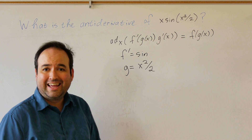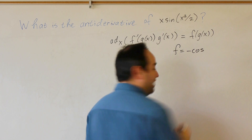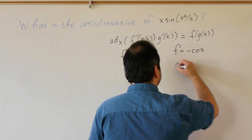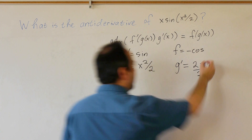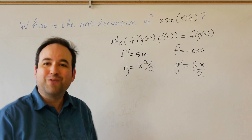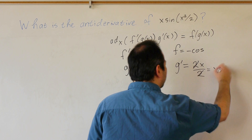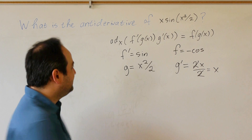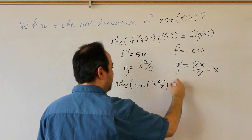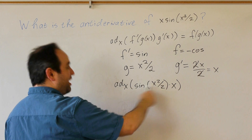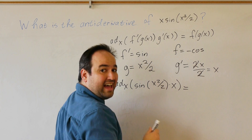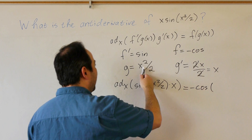If f prime is sine, then f is negative cosine — the antiderivative of sine. If g is x squared over 2, then differentiating gives g prime equals 2x over 2, where the 2 comes from bringing the exponent down and reducing it by 1. The 2s cancel, leaving g prime equals x. So our formula tells us the antiderivative of sine of x squared over 2 times x equals negative cosine of x squared over 2.